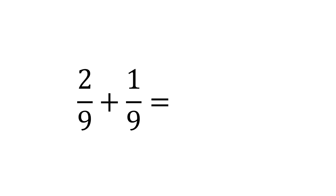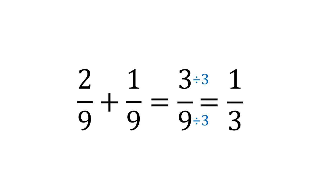Sometimes we'll get an answer that needs simplifying. In this example, we've got two ninths add one ninth. The denominators are the same, so we add the tops together to give us three ninths. We can see that top and bottom are both multiples of three, so if we divide them both by three, we get an answer of one third.